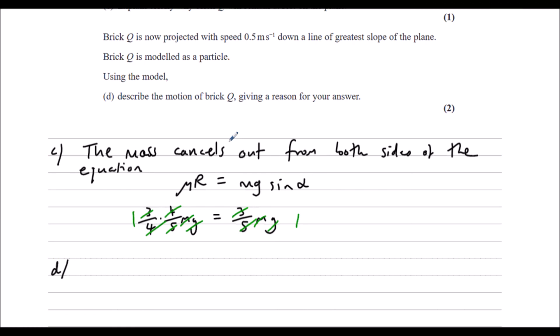So because the forces up equal the forces going down, there will be no acceleration. So there will be no acceleration. It will describe the motion. So no acceleration. So it'll be a constant speed. The speed will be constant. The brick will move at a constant speed down the plane.